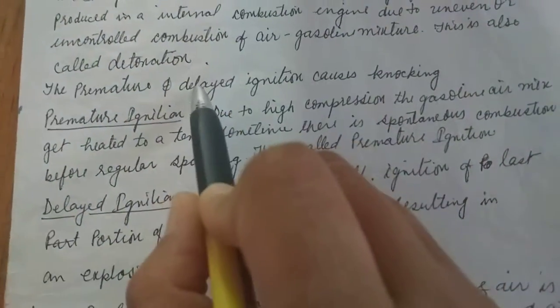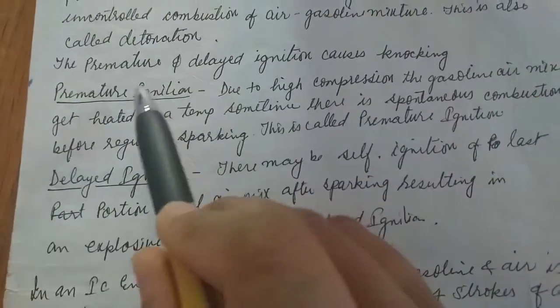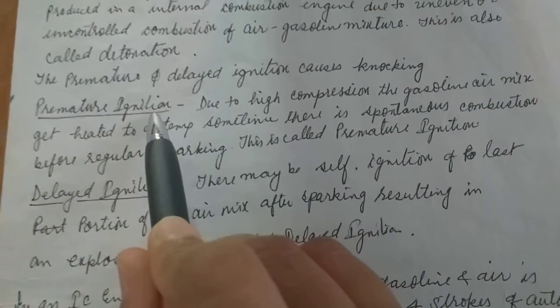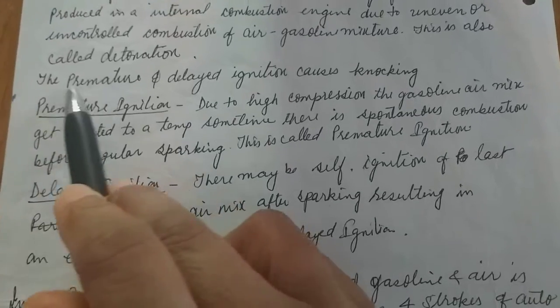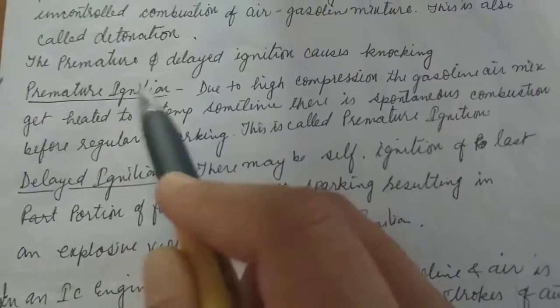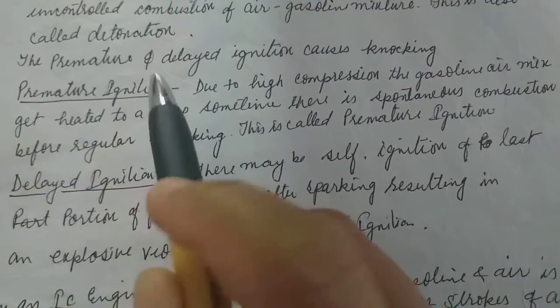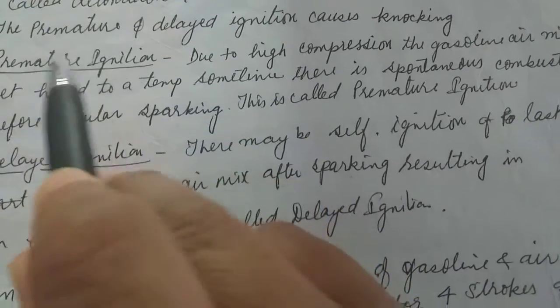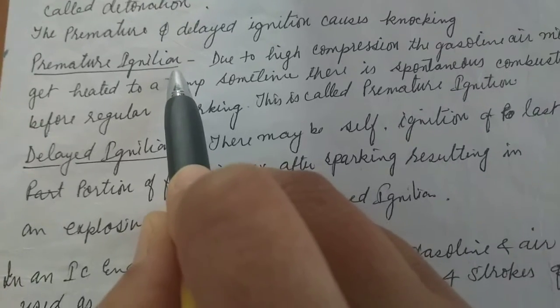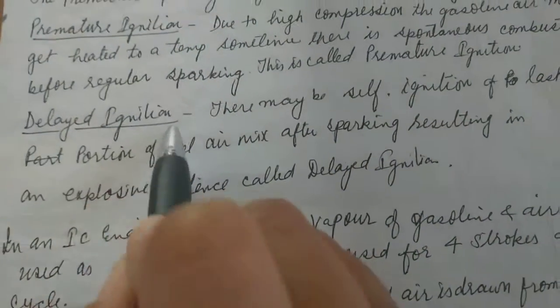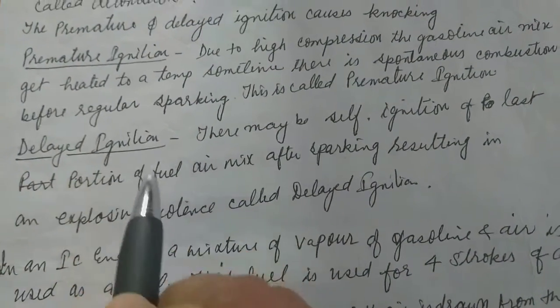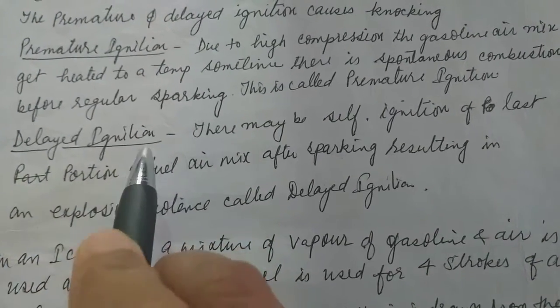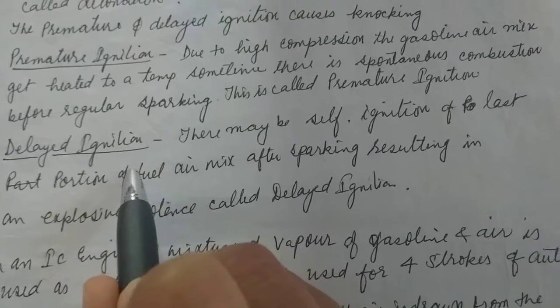This knocking is produced by two reasons: premature ignition and delayed ignition. Premature ignition occurs when spark plug sparking happens first, igniting the fuel air mixture prematurely. Delayed ignition occurs when the last portion of fuel air mixture undergoes self-ignition.